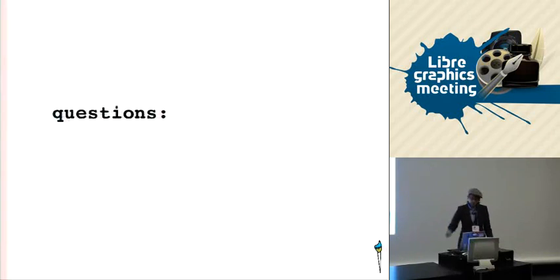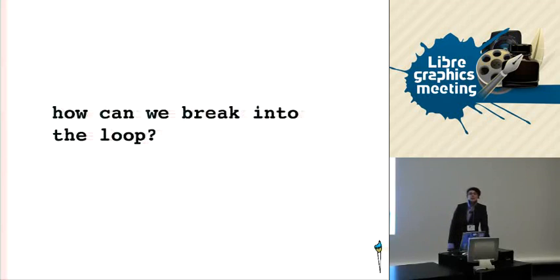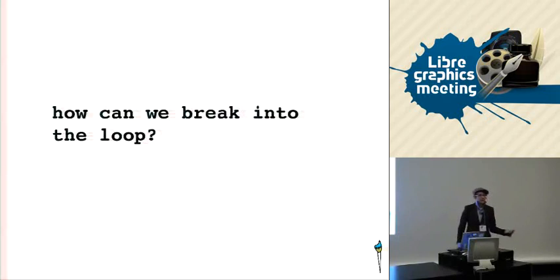All of this raises some questions. Number one, how do we get designers to change their habits? What can we do to convince them that open source A exists, B is viable, and C is something that they can actually see themselves using? Next question — how do we break into the loop? Where do we approach in order to break into the education, industry, and print shop loop? Because if you teach it in educational institutions, suddenly all of your graduates are unemployable. If you are a company that wants to use open source, you have to find people who actually know how to use the software. If you're a print shop that wants to transition over, you're going to lose a lot of business. So how do we break the loop?